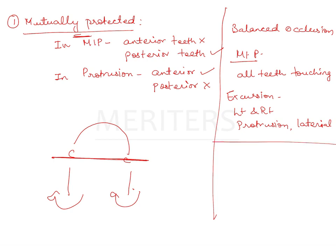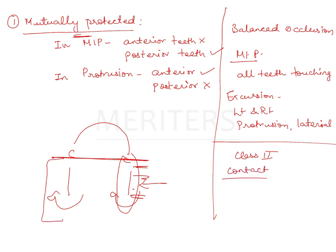In a Kennedy Class 2 situation — teeth present on one side — you arrange according to maximum intercuspation of the opposing arch. In the given case with a complete denture opposing, you still arrange upper teeth according to natural teeth on the present side. On the edentulous side you want maximum posterior contact. If only the canine is touching in lateral excursion, it is canine guided occlusion. If premolars and molars are also touching — a group of posterior teeth — that is group function occlusion.